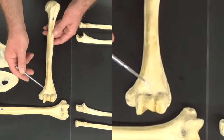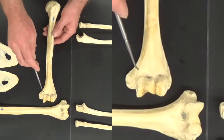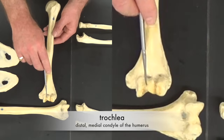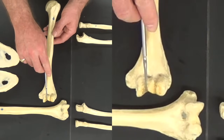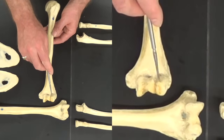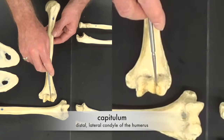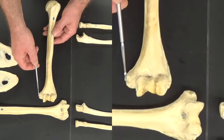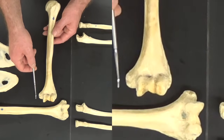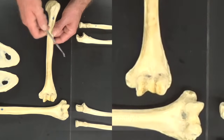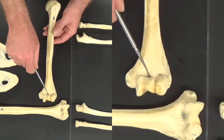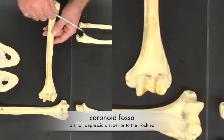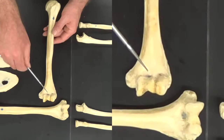On the distal end, we have our condyles. The medial one is the trochlea, which means pulley, and this articulates with the trochlear notch on the ulna. Laterally, we have the capitulum, and this articulates with the head of the radius. On each side of the condyles, we have an epicondyle — the medial epicondyle and the lateral epicondyle. On the anterior side, we have the coronoid fossa, where the coronoid process of the ulna fits in during flexion.